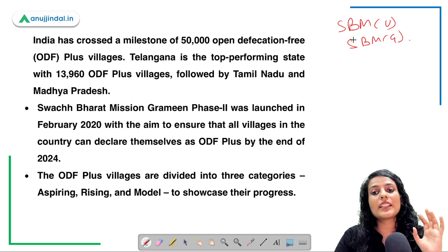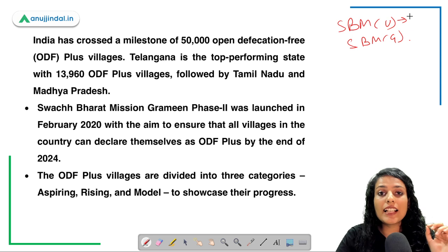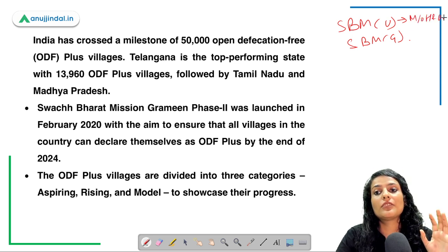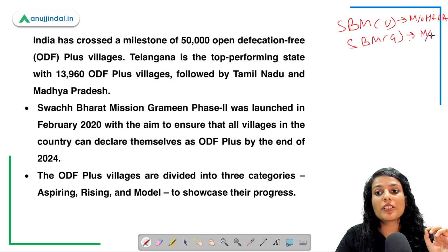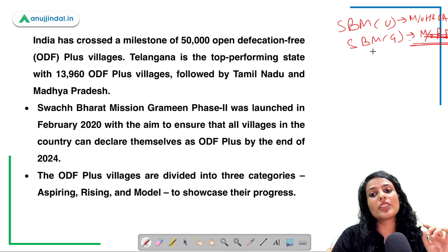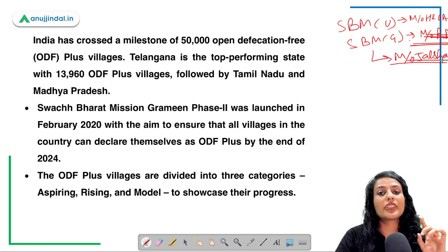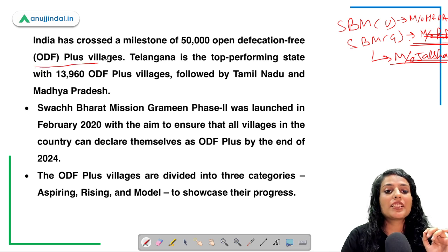ODF is a mission to make India open defecation free. It is launched under both Swachh Bharat Mission Urban and Swachh Bharat Mission Grameen. Swachh Bharat Mission Urban comes under the Ministry of Housing and Urban Affairs. Swachh Bharat Mission Grameen comes under the Ministry of Jal Shakti — please note that correction.